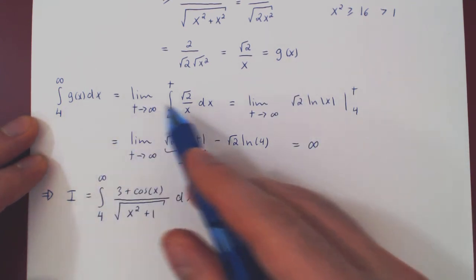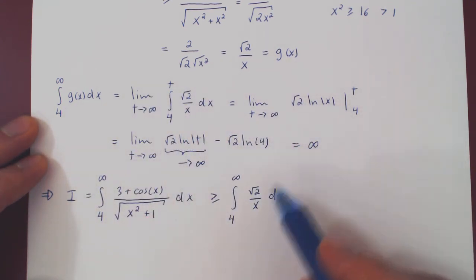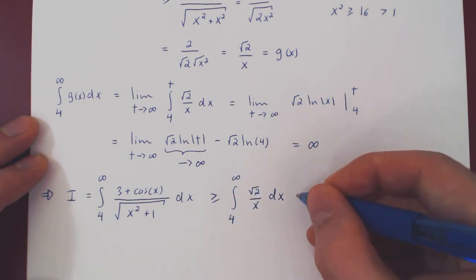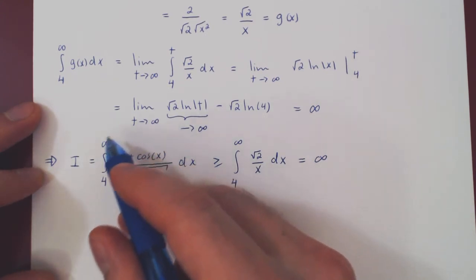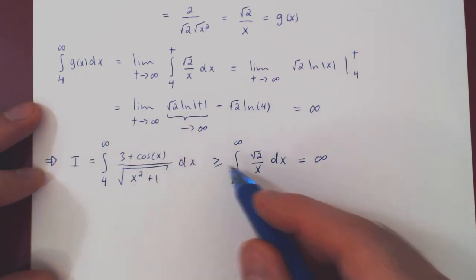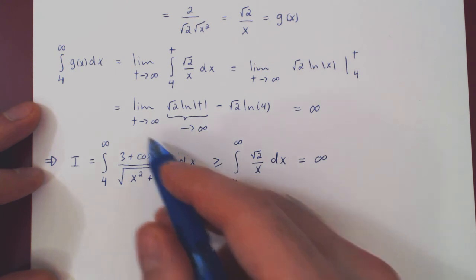But as we have just found, this improper integral is equal to positive infinity. And so now, the original integral is at least as big as infinity, so it must be infinite.